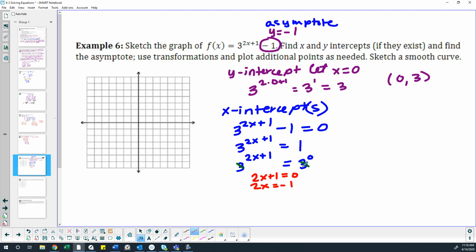Which means 2x equals negative 1. I subtracted the 1 from both sides, and then divide by the 2. So we get negative 1 half. So our x-intercept would be at negative 1 half comma 0.